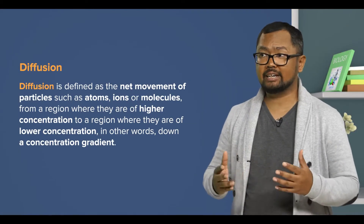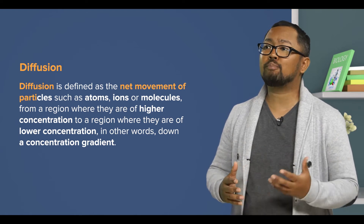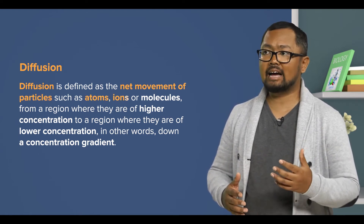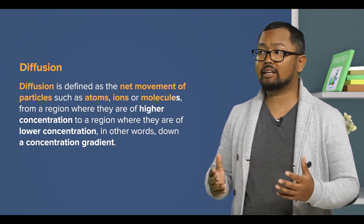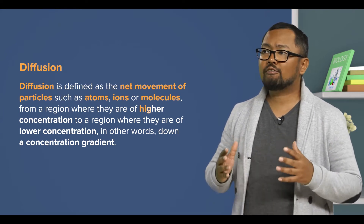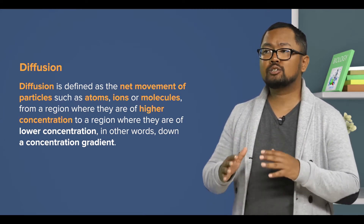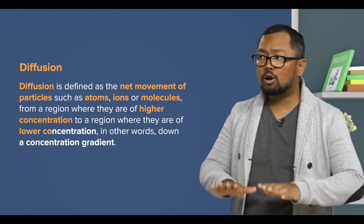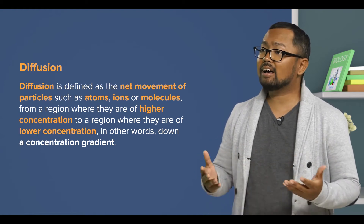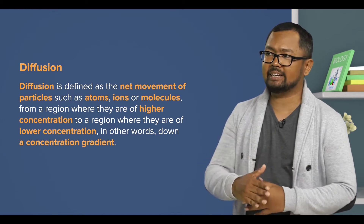Diffusion is defined as the net movement of particles — such as atoms, ions, or molecules — from a region where they are of higher concentration to a region where they are of lower concentration. In other words, down a concentration gradient.